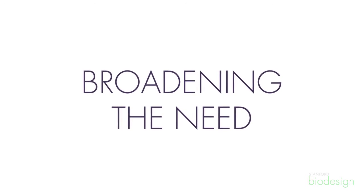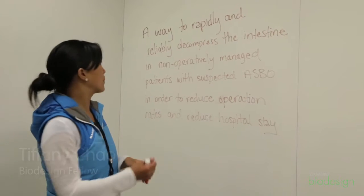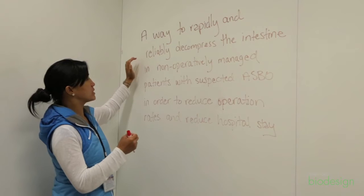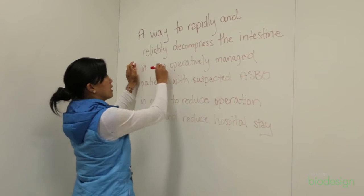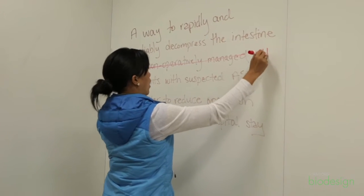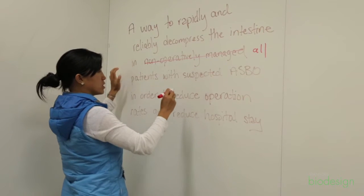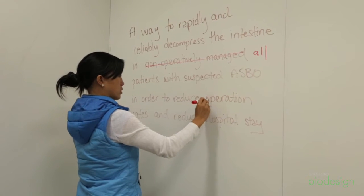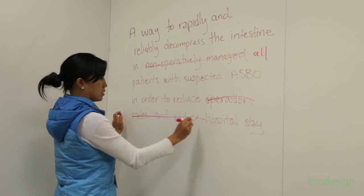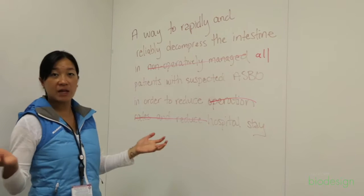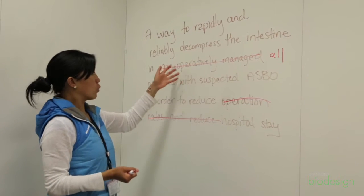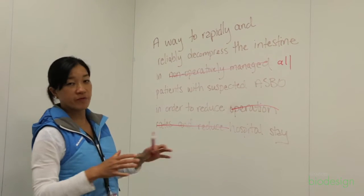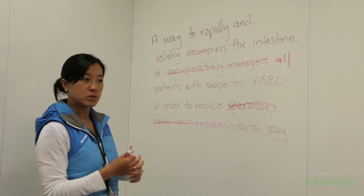One way you might scope this need up to reach a broader population would be if you said a way to rapidly and reliably decompress the intestine in all patients with suspected small bowel obstruction in order to reduce hospital stay. So any patient that comes with a small bowel obstruction, regardless of whether they're nonoperatively managed, could fall under this need statement.